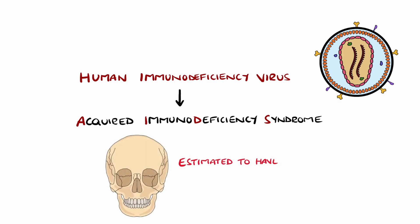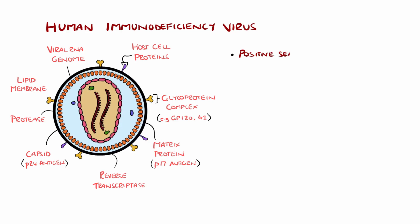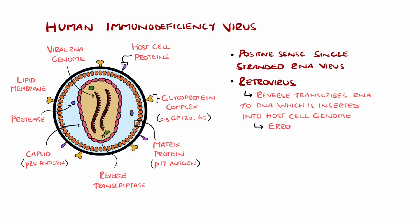Overall, the virus is estimated to have led to over 40 million deaths worldwide. HIV features two copies of positive-sense single-strand RNA, and importantly is a retrovirus, meaning it produces reverse transcriptase that reverse transcribes its RNA into DNA, which is then inserted into the host genome, leading to production of more viral proteins. The reverse transcriptase the virus uses is inherently error-prone, resulting in many different subtypes and variations, which contributes to viral resistance.